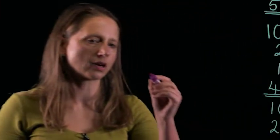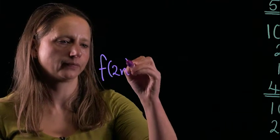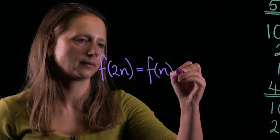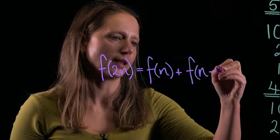And this generalises to give us f of 2n is equal to f of n plus f of n minus 1.